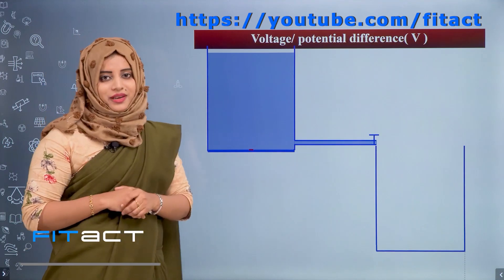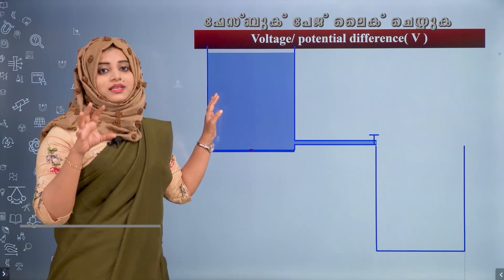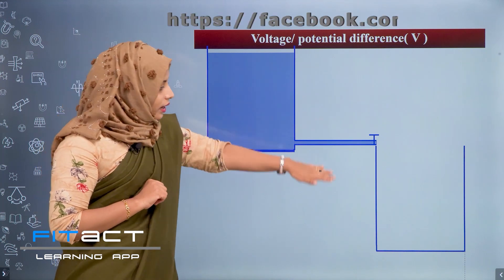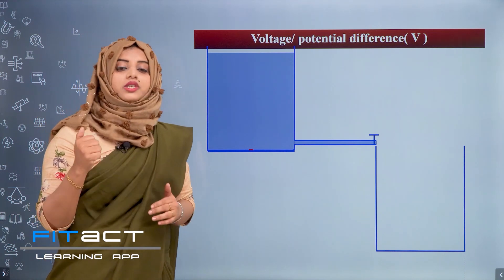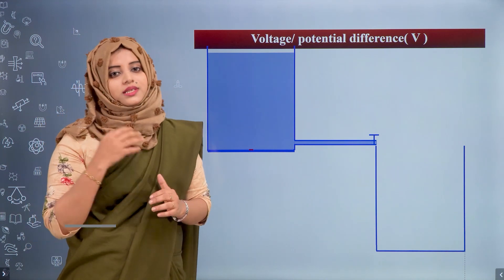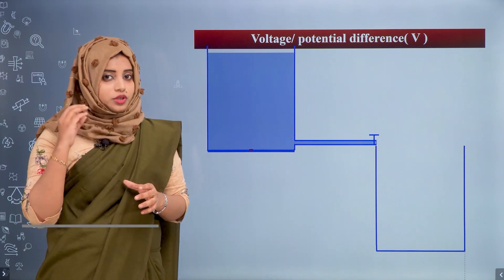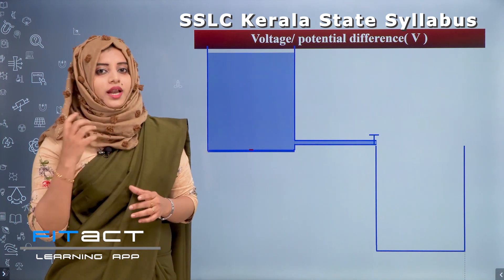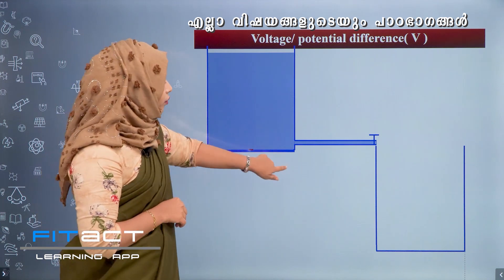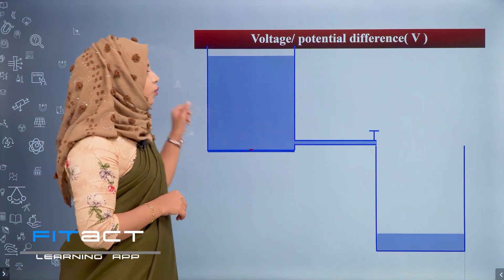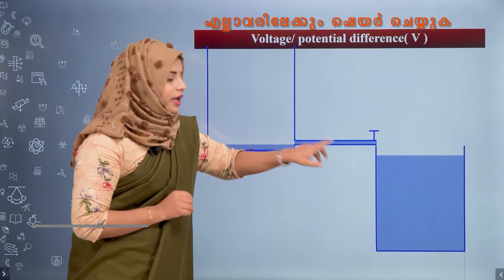Next, Voltage or Potential Difference, denoted by V. Look at this picture. Here we have two beakers of the same size. Potential energy is the energy possessed by a body by virtue of its position. Because of the difference in position, there is a potential difference between the two beakers. When we open the valve, water flows from the beaker having high potential energy to that of low potential energy.